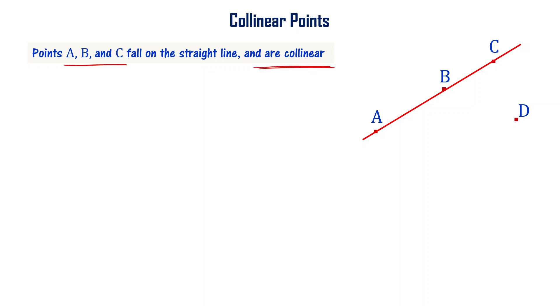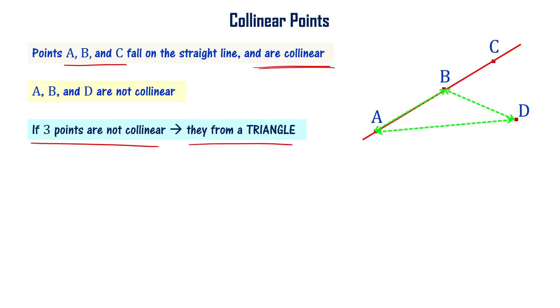A, B, C and D points are not collinear in the sense they are not falling on a straight line. If three points are not collinear, they form a triangle. Please note this. If they are collinear, they fall on a straight line. If they are not collinear, they form a triangle.